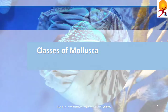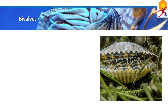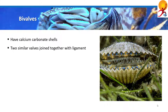First, we look at Bivalves. This group includes molluscs which have a calcium carbonate shell made of two usually similar parts called valves. These two valves are joined together with the help of a ligament at a point called the hinge. Members of this class include clams, oysters, cockles, mussels, scallops, etc.